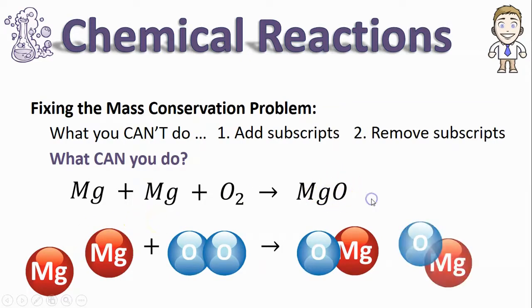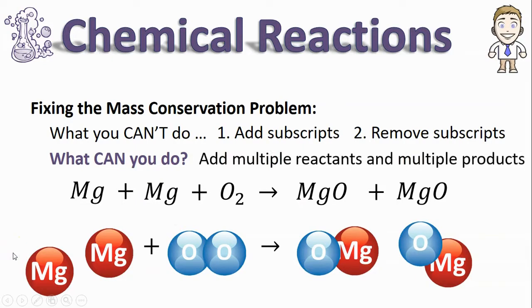In the products this produced two separate MgOs so we could do the same thing in our equation. Just write the formula for MgO two times. This is exactly what you are allowed to do to fix the conservation problem by adding multiple reactants and multiple products.